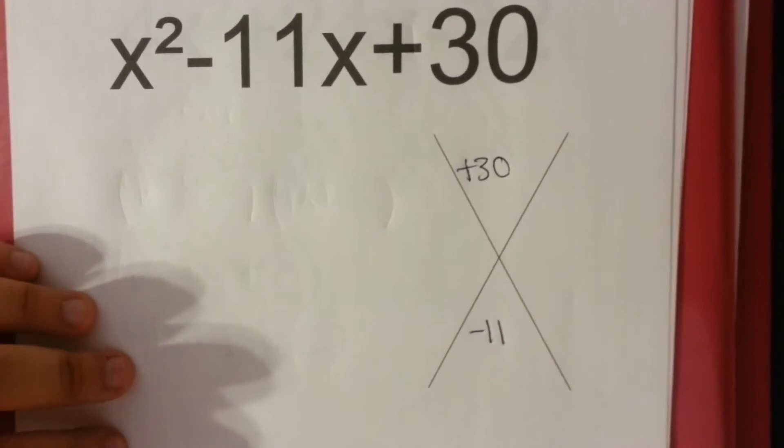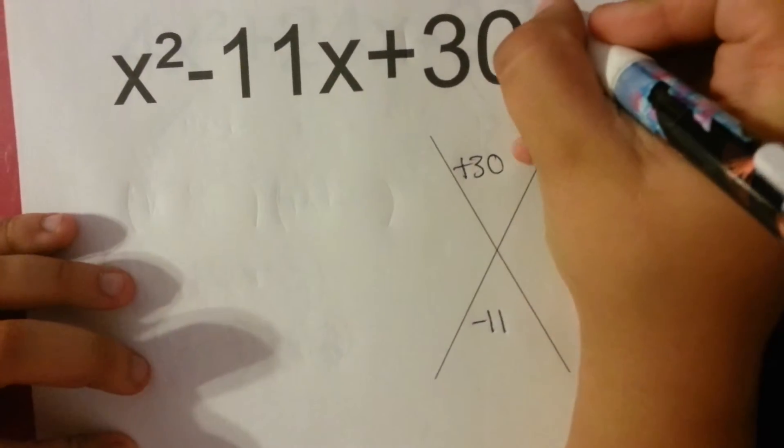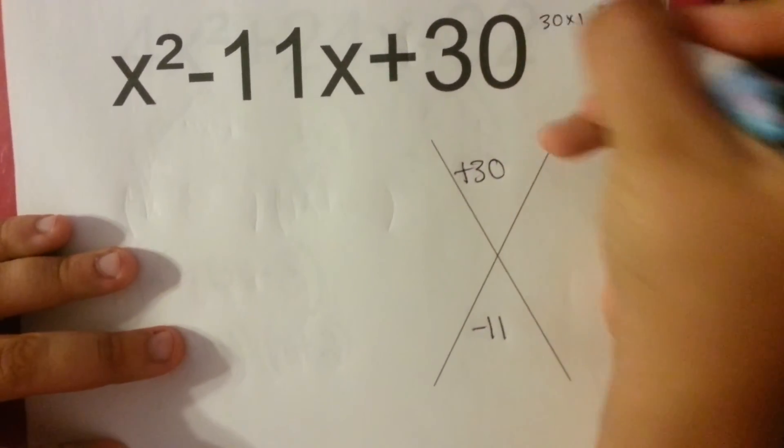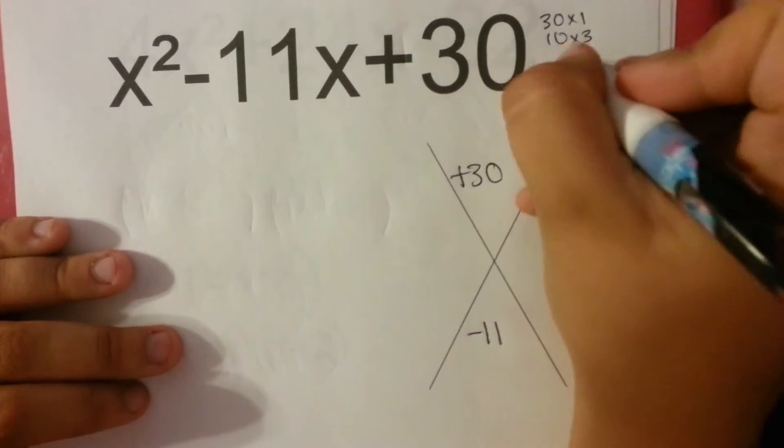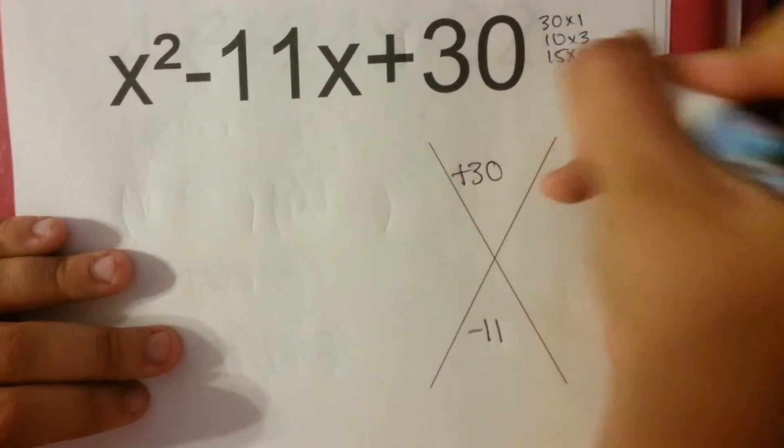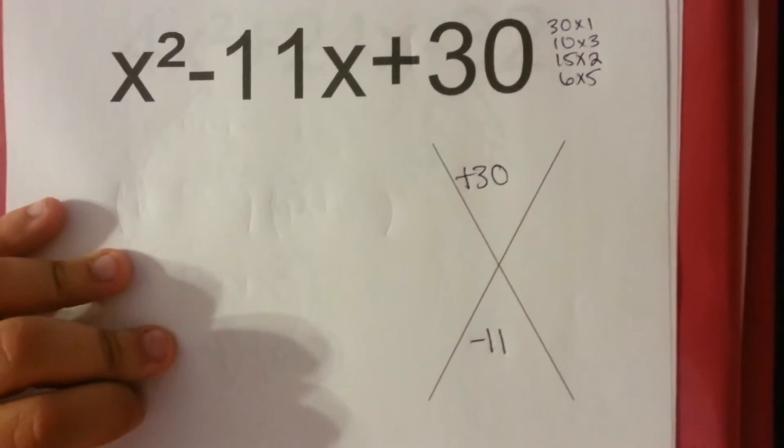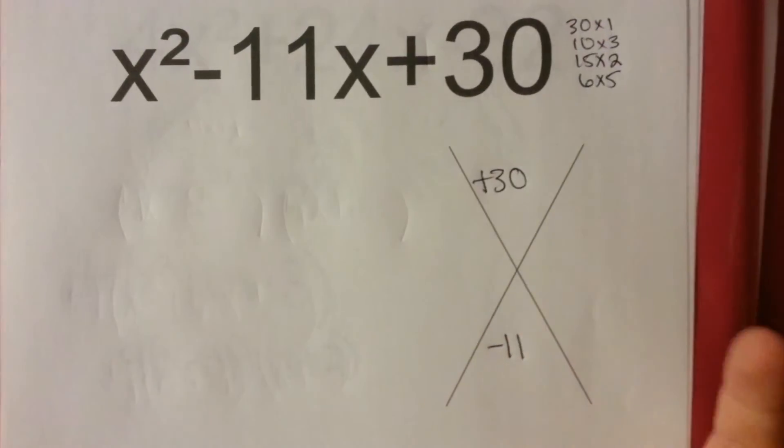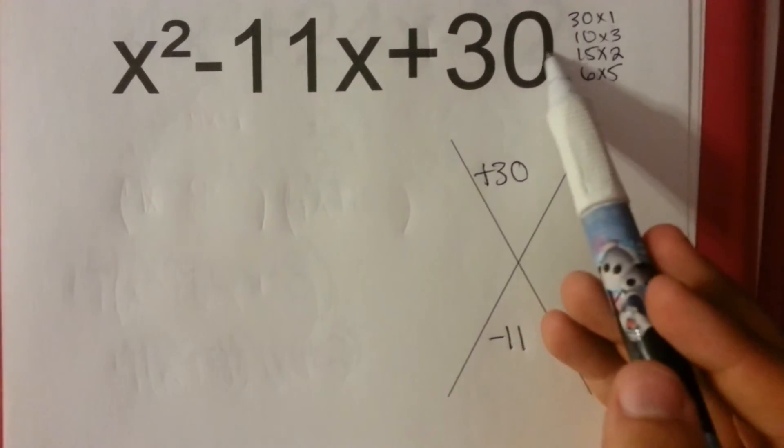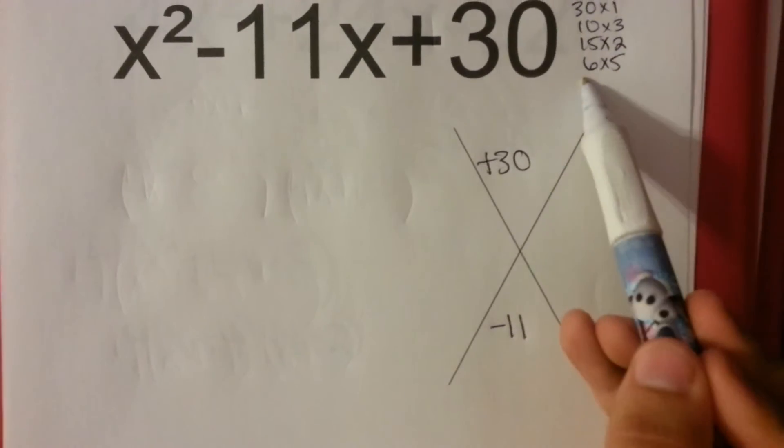So I know that my factors of 30 could be 30 and 1, 10 and 3, 15 and 2, 6 and 5. If I add 30 and 1 together, that would get me 31. That doesn't work. This one would get me 13. This one would get me 17. This one would get me 11.